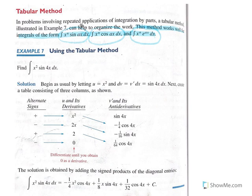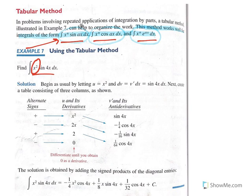In example 7 from our textbook, there is a short paragraph about the types of problems for which the tabular method works well. In problems involving repeated applications of integration by parts, a tabular method can help organize the work. This method works well for integrals of the form listed here, and our current problem fits the first form. The higher the power of x, the more times you have to do repeated applications — so you can see the benefit of an efficient setup when doing perhaps four repeated applications.